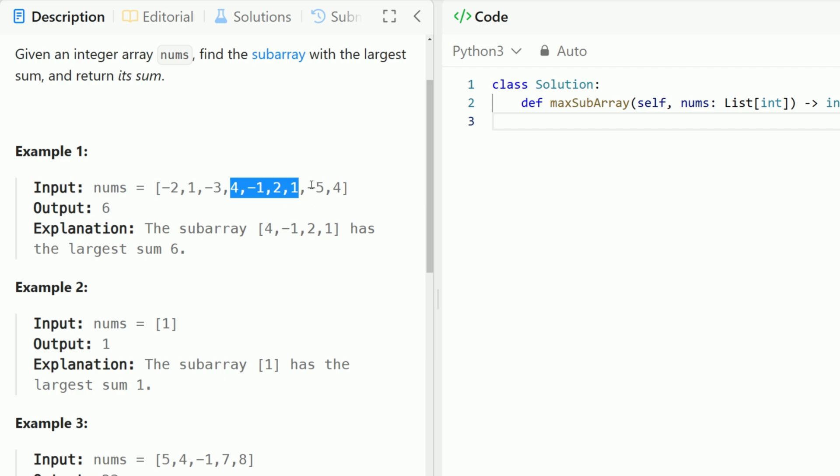Now you might ask why didn't we extend out to negative 5 and 4? It's because negative 5 plus 4 is negative 1 and it'll actually lower the sum to 5 instead of 6.